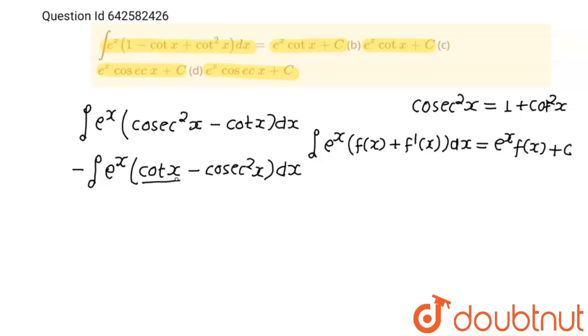So if you will consider cot x as f x in this integration, then minus cosec square x is f dash x. Differentiation of cot x is minus cosec square x.